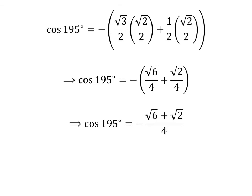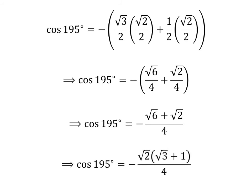As the denominator of both fractions in the above expression is the same, cosine of 195 degrees is equal to minus square root of 6 plus square root of 2, all over 4. Taking out the common factor square root of 2 in the numerator gives us cosine of 195 degrees is equal to minus square root of 2 times the quantity square root of 3 plus 1, over 4.